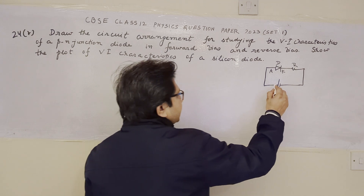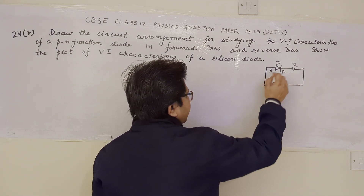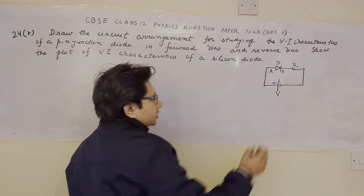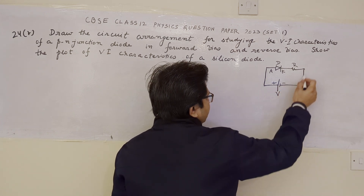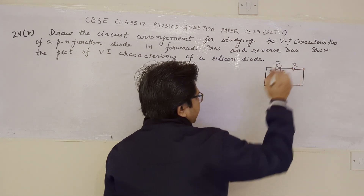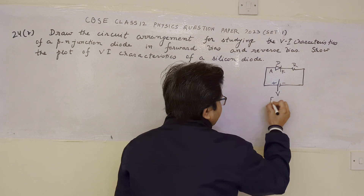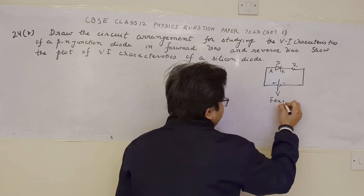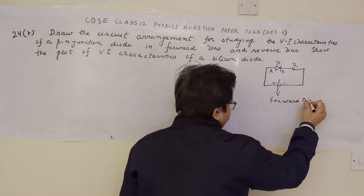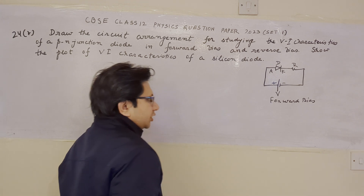The battery is connected such that the positive terminal is connected with the anode, and the negative terminal of the battery is connected to the cathode through this particular resistor. This particular arrangement is known as forward bias, and we have to draw this arrangement first.